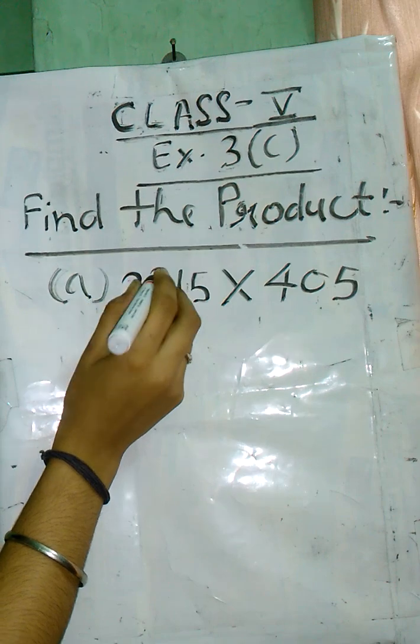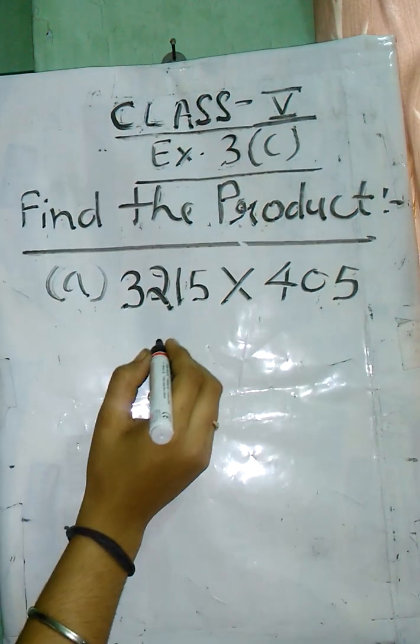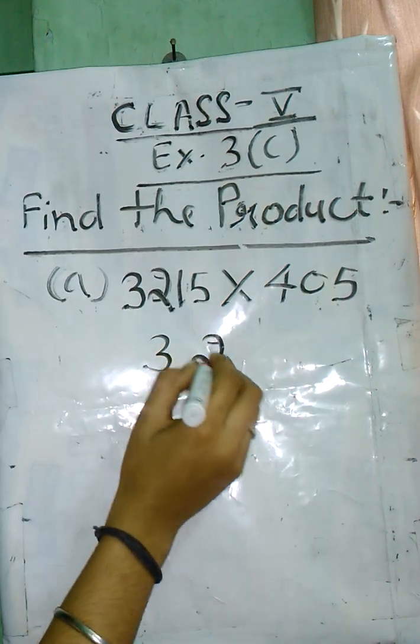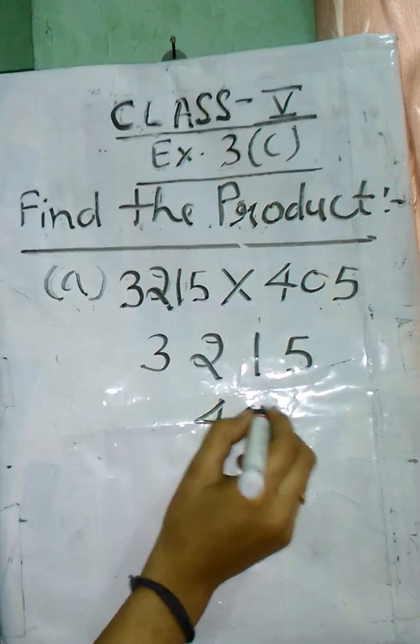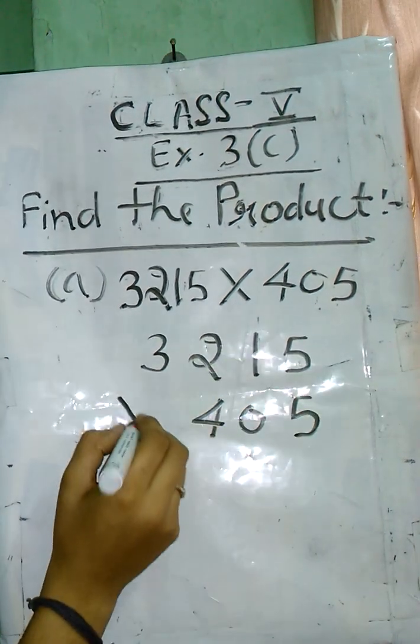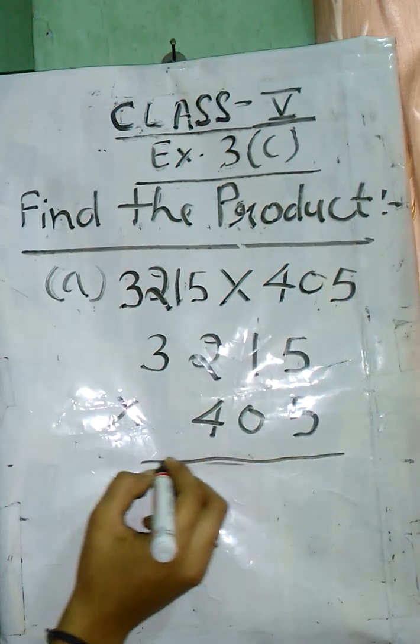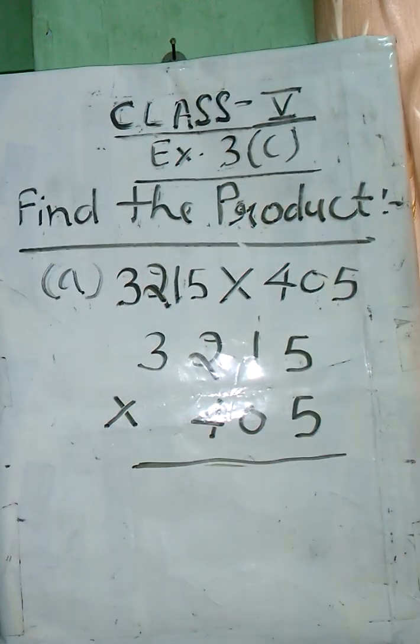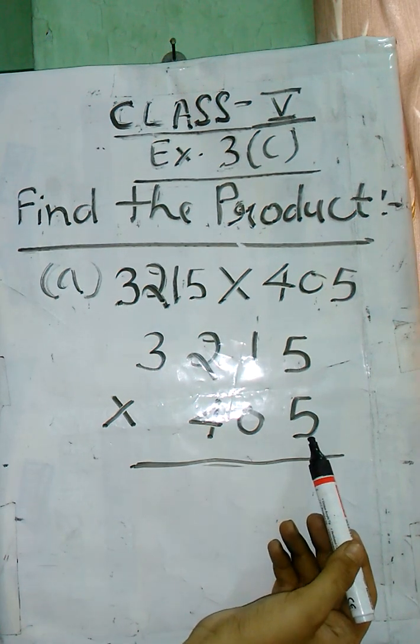Write 3,215 times 405, first write it vertically. Then you have multiplication, and after that first multiply with the rightmost digit of the second number.